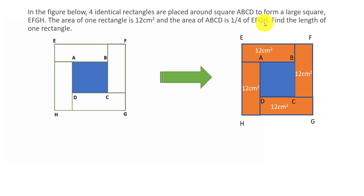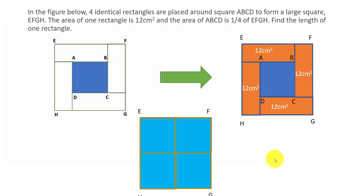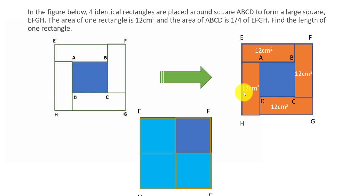The area of ABCD is one fourth the area of EFGH. This whole thing is the total area of EFGH. If we divide that into four parts — one part of that equals the area of ABCD — the remaining three parts would be the four rectangles: 12 + 12 + 12 + 12, which is 4 times 12, equals 48. So 48 cm² should be the value of those three parts.